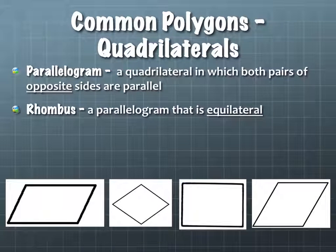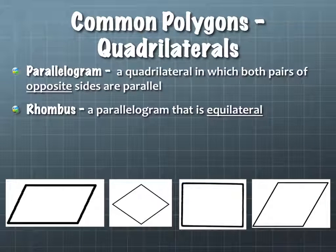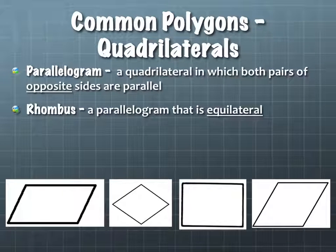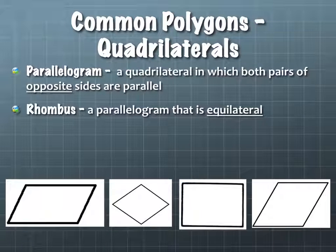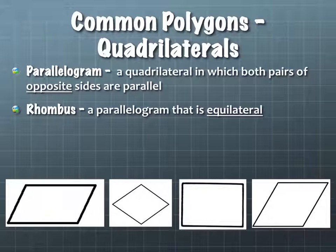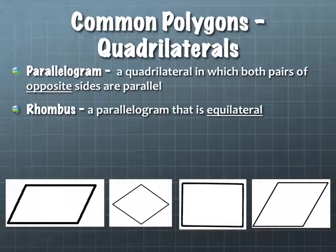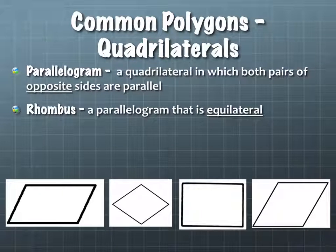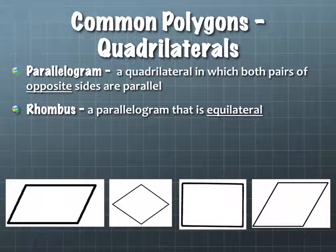Some other common quadrilaterals: a parallelogram is a quadrilateral where both pairs of opposite sides are parallel. A trapezoid said one or two pairs; this one says two. So if I have a parallelogram, it's also a trapezoid, because a parallelogram has two pairs of opposite sides parallel, and a trapezoid can also have two pairs.